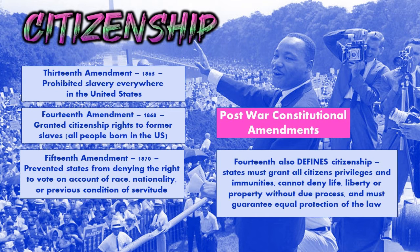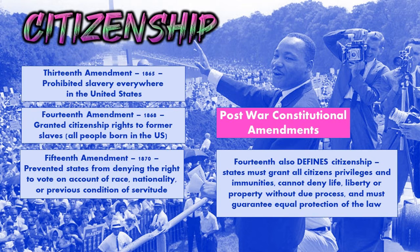The 14th Amendment knows the states will not do any more than the bare minimum. So it defines citizenship. It says that states must give all citizens privileges and immunities — treat every citizen of the country exactly the same way you treat the citizens of your state. It says states cannot deny life, liberty, or property without due process — that's our due process clause. And it says that states must guarantee the equal protection of the law to all citizens. The 14th Amendment goes a long way not just to saying all these people are citizens, but defining what citizenship means and how you have to treat a citizen.